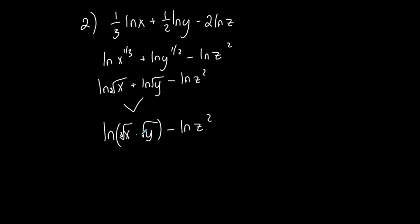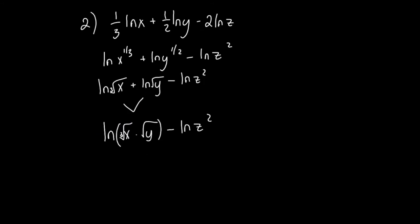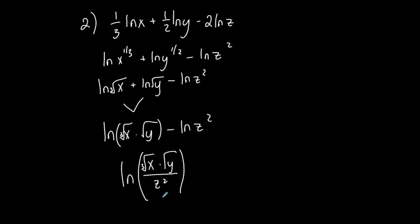Now I have a difference of two logs with the same base, and they condense into a single log of a quotient. The numerator is the cube root of x times the square root of y, and the denominator is z squared — all under a single natural log. Now I have one single log written, and here is my final condensed logarithmic expression from this expanded sum or difference.